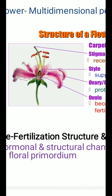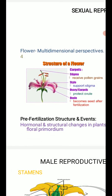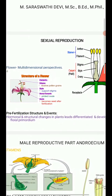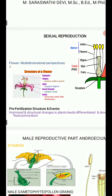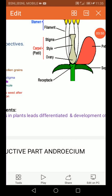The outer two — calyx and corolla — are called the non-essential parts of the flower. Androecium and gynoecium, these two whorls, are called the essential parts of the flower, because they are directly involved in reproduction.